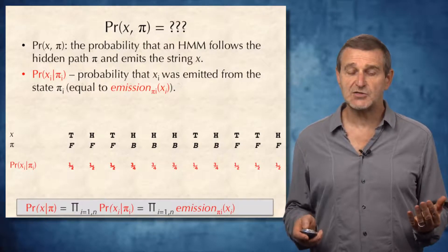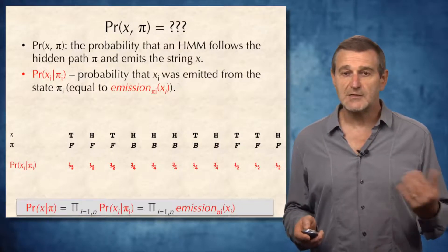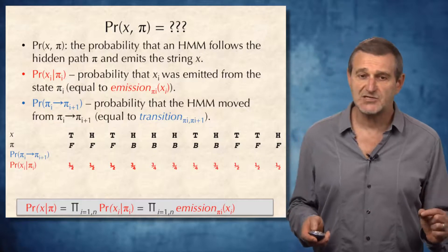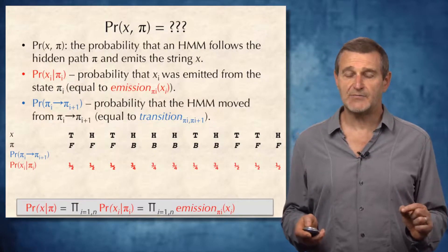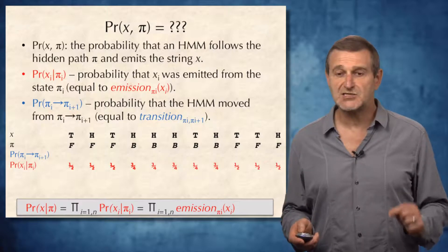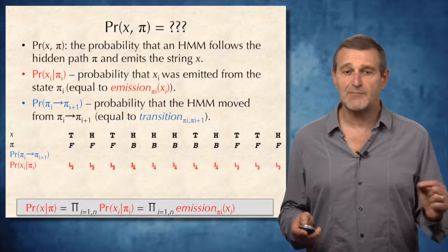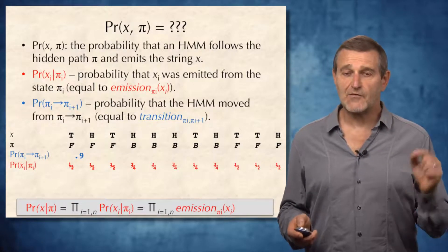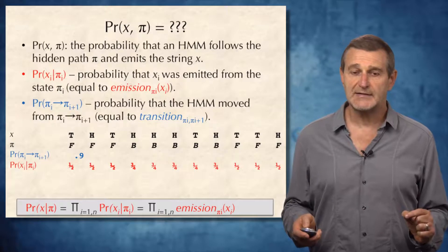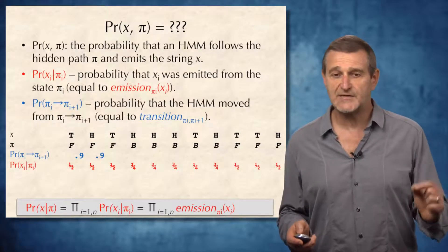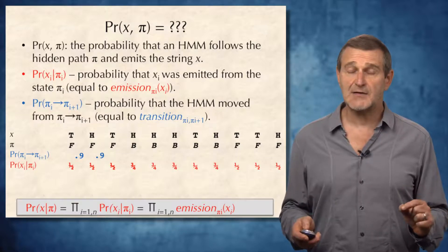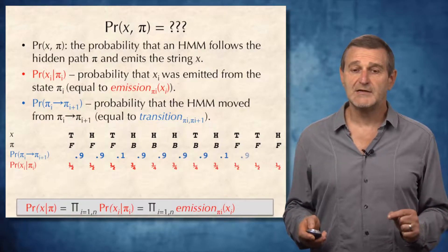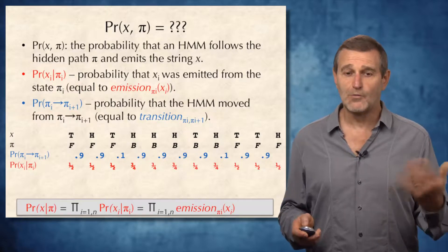We also need the probability of transitioning from state πᵢ to state πᵢ₊₁, which is simply the transition probability from state πᵢ to πᵢ₊₁. At the first step we transition from fair to fair with probability 0.9, again 0.9 at the next step, but then from fair to biased with probability 0.1. Continuing this way, we compute all transition probability values.